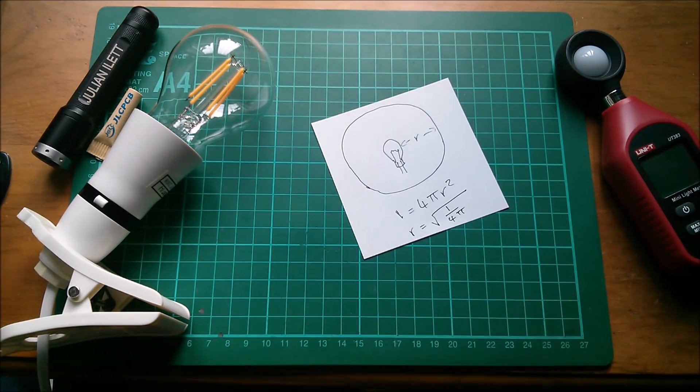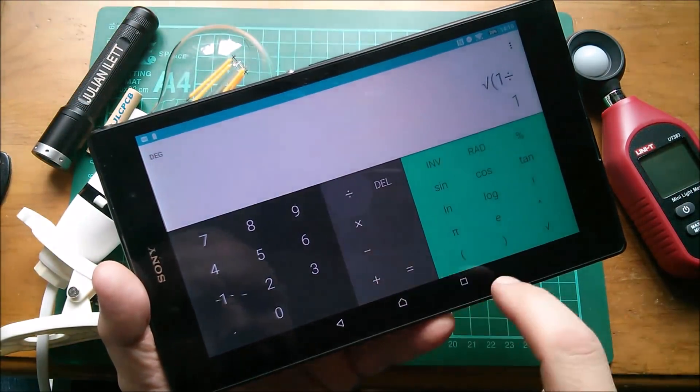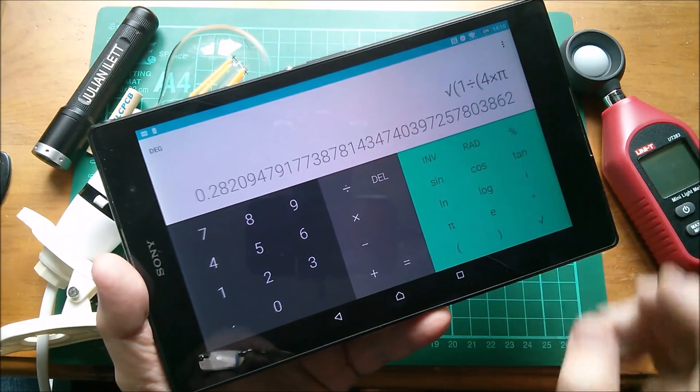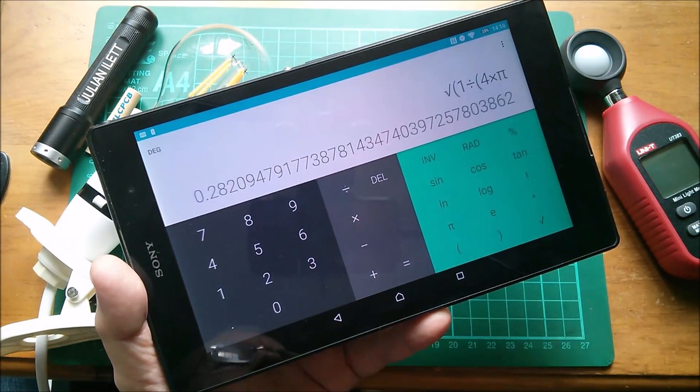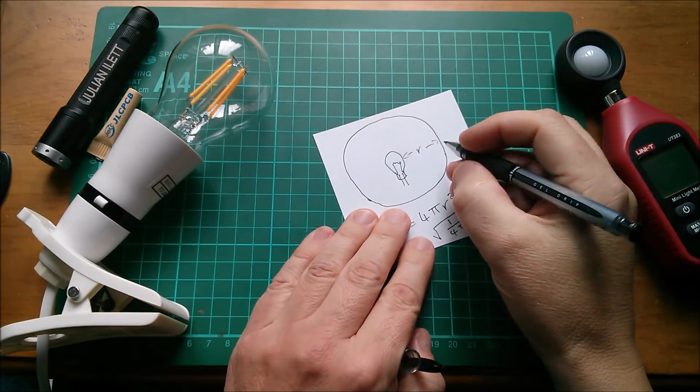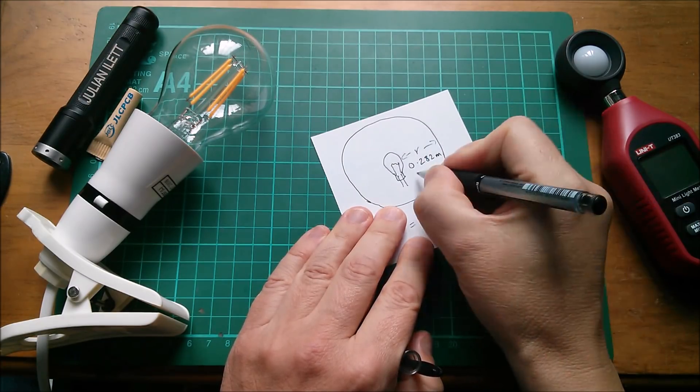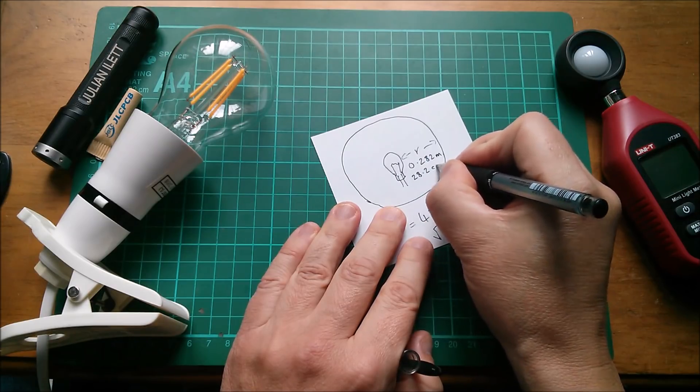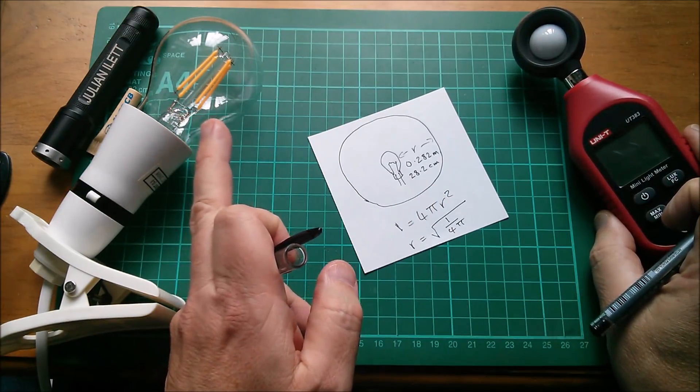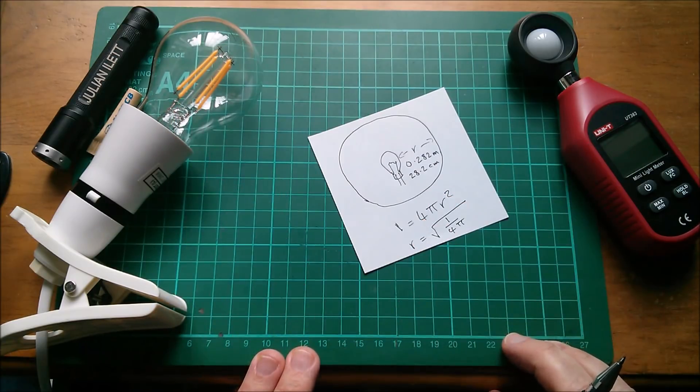Let's work that out. So we want the square root of 1 divided by 4 times π. So it's 0.282 meters. So r here, the radius of the sphere, needs to be 0.282 meters or 28.2 centimeters. So if I put this light meter 28.2 centimeters away from this bulb, I should be able to measure lumens as lux. Let's try it.